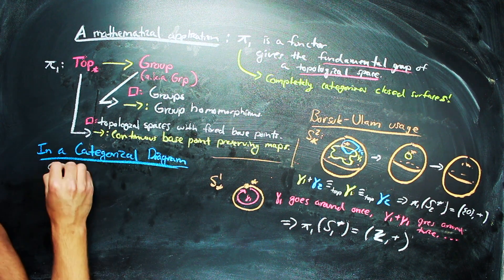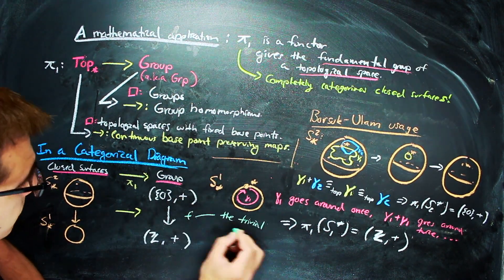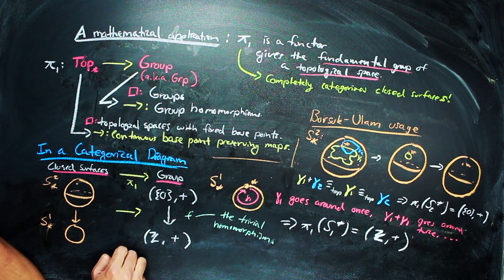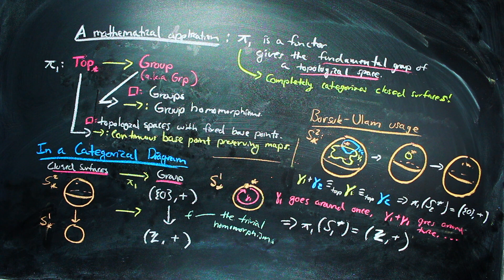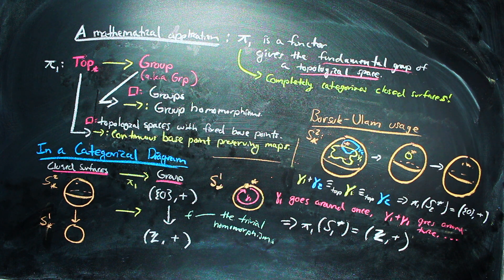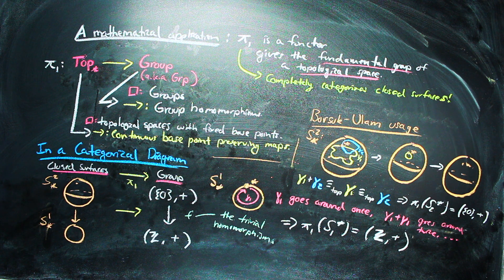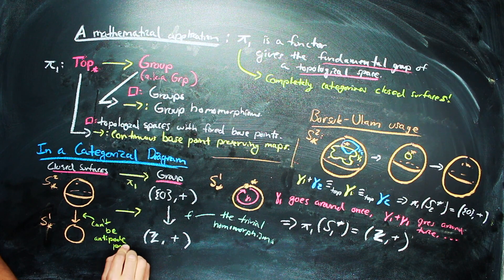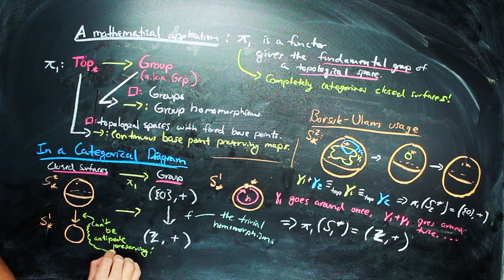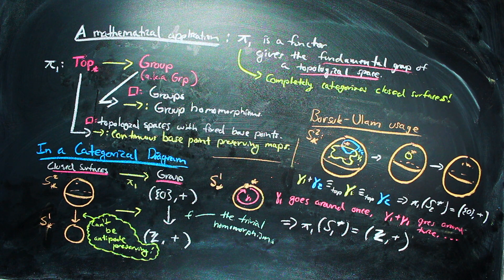So categorically, one can represent this information about the sphere and the circle in the following diagram using the functor π₁. The proof of the Borsuk-Ulam theorem follows from the fact that there is no additional morphism in this diagram that is also antipode-preserving. That is, any antipode-preserving map is not continuous. If it were, there would be a non-trivial morphism from the trivial group to the group of the integers with addition, which just doesn't happen.